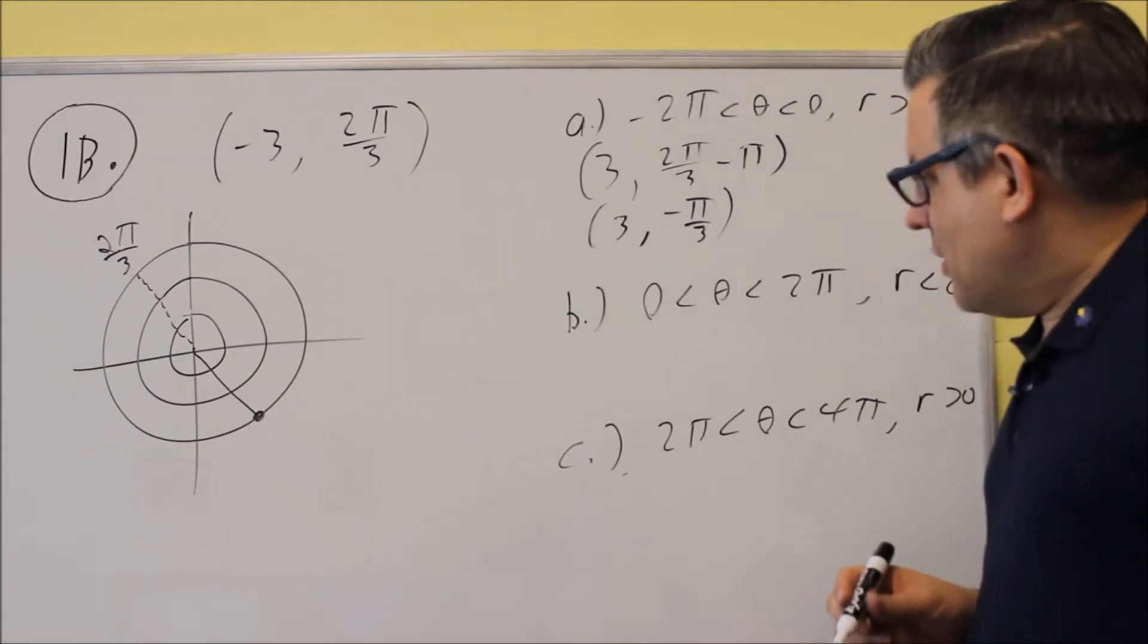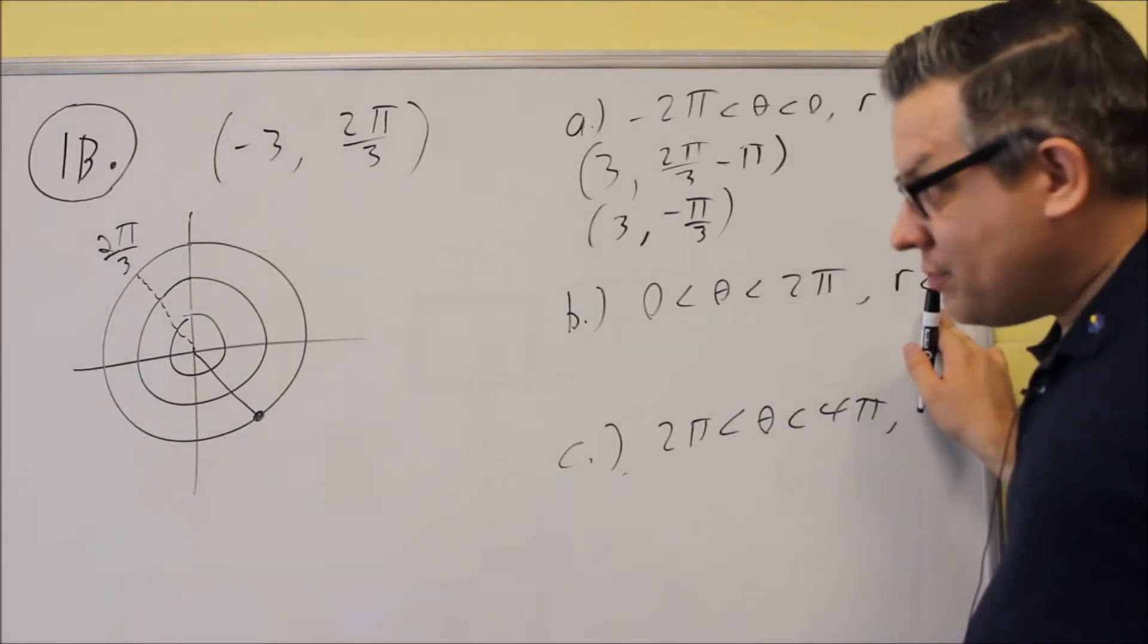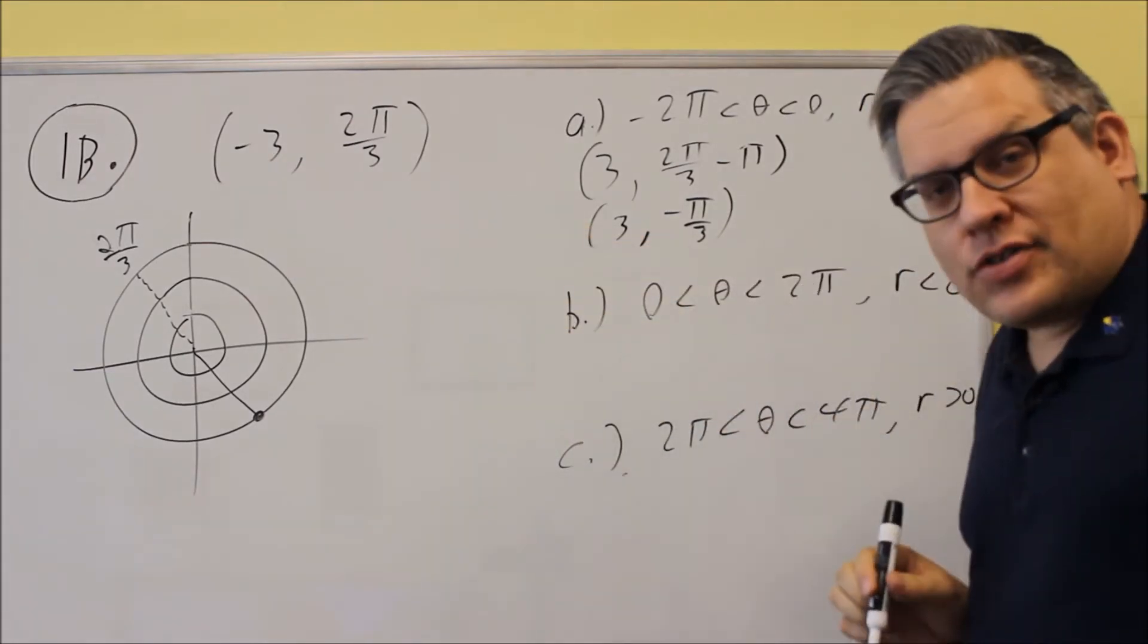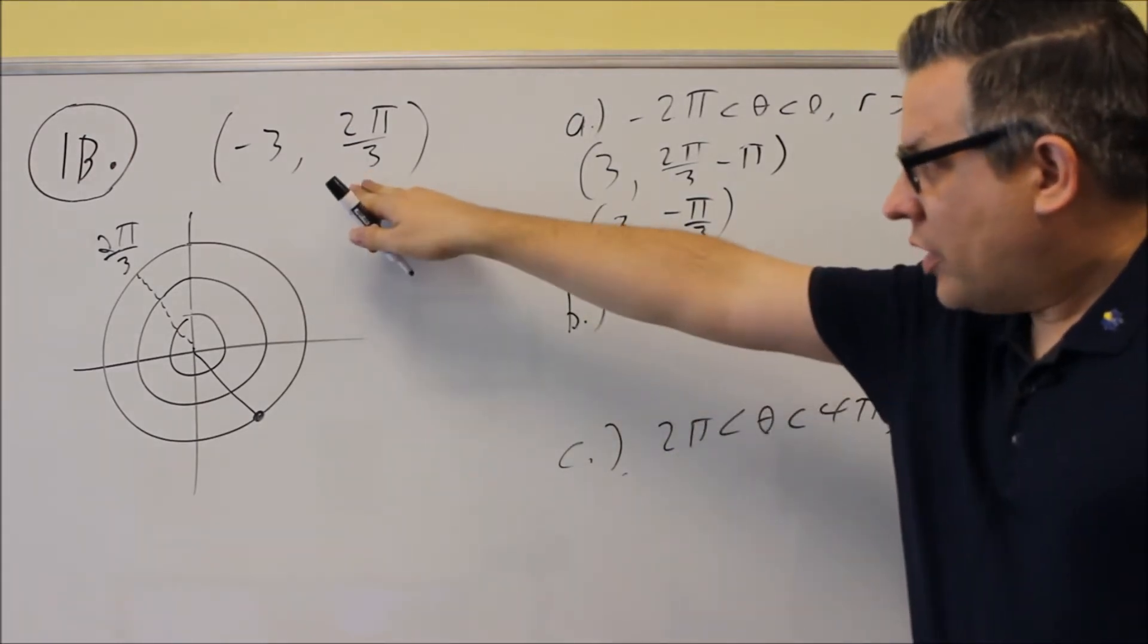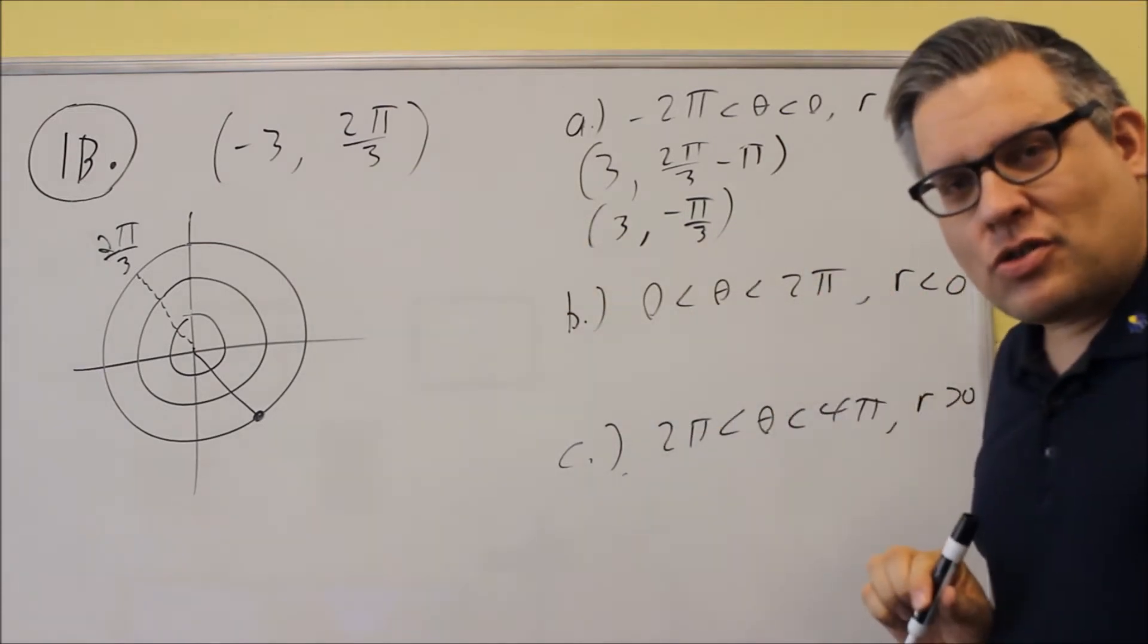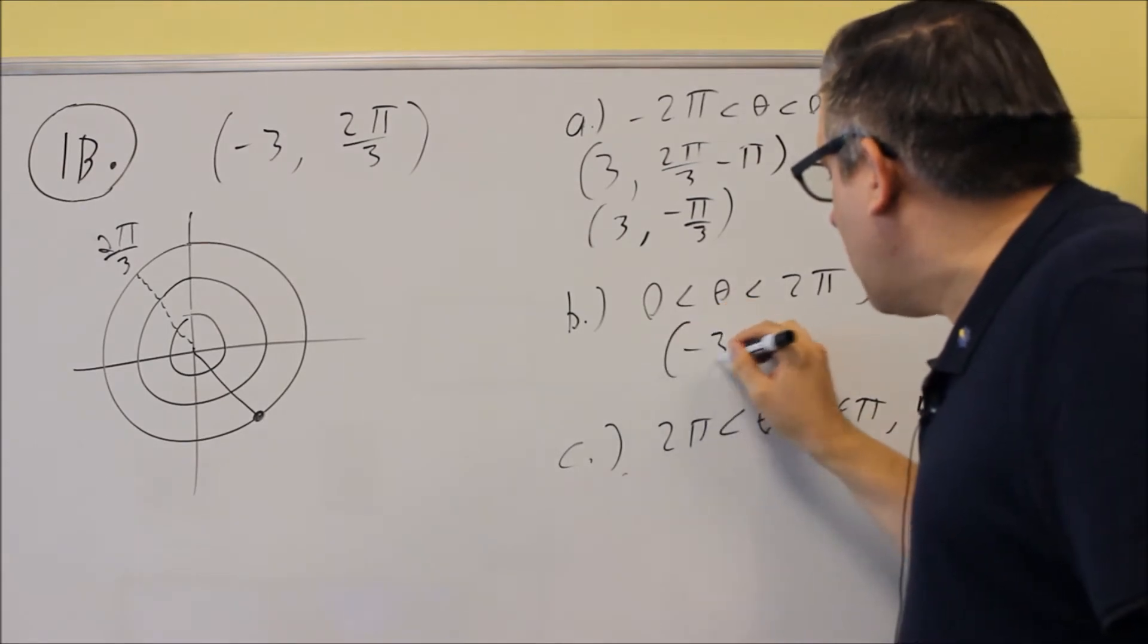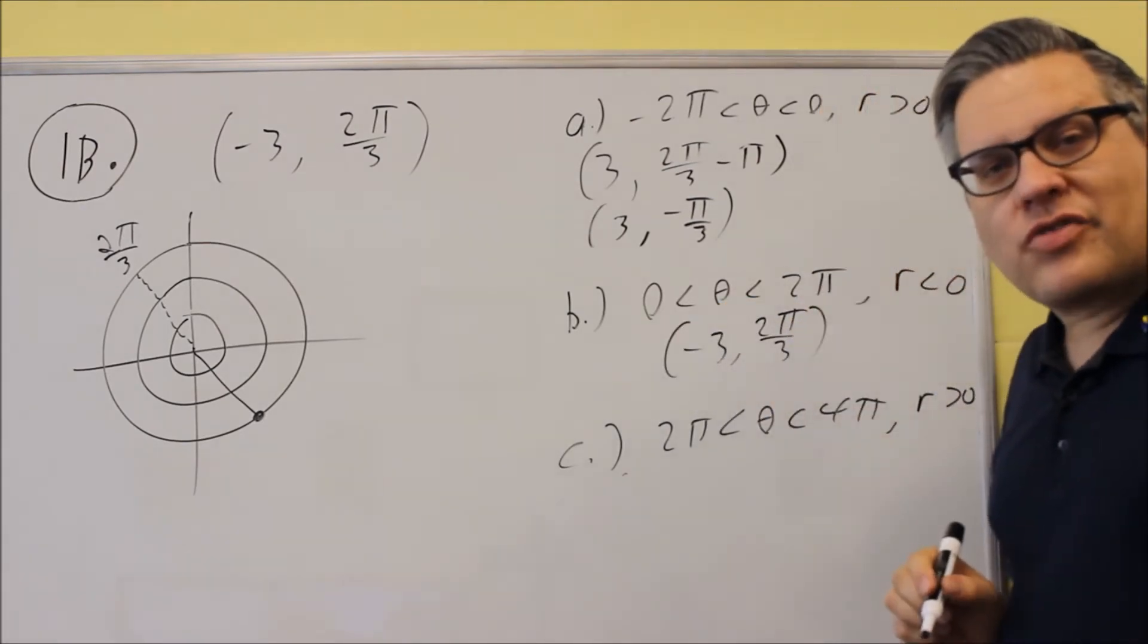Okay, next. We want r to be less than 0, which it is. The angle has to be positive. Well, if we take a look at what our original point is, this point happens to already match these conditions. So sometimes you may not have to do anything at all. In this case, if I just write down the original point I had, that automatically satisfies that condition.